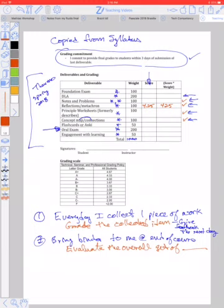And I do that for all of these things, the notes and the problems, reflections, the worksheets, concept maps. And you know what, maybe I give them a score of 3.5 on the notes and problems. So that's 350, score of 4.5 on the worksheets for 450, give them a score of 3 on the concept map and connections, 300.